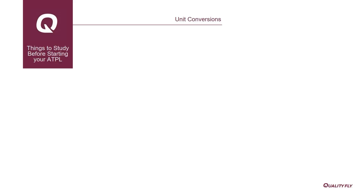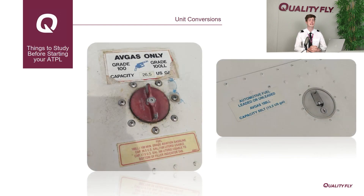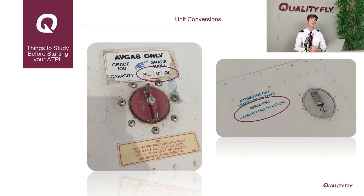Firstly, let's talk about unit conversions. As pilots, we are going to be operating aircraft from many different parts of the world, and these different parts often use different units — we need to be able to confidently convert between these. Here we see the fuel cap of our American-made Cessna 172, and here the fuel cap of our European-made Tecnam 2002. The Cessna lists its fuel capacity only in US gallons, whereas the Tecnam lists it in both US gallons and liters.